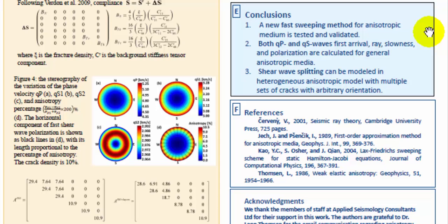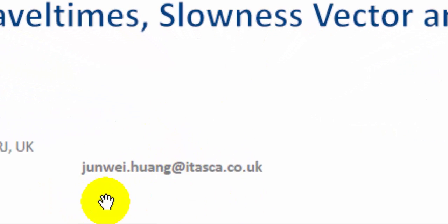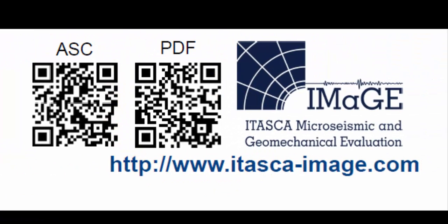We have developed a new fast sweeping method for anisotropic media and have tested and validated it in multiple tests. Both P and shear wave can be calculated including the first arrival, ray direction, slowness vector, and polarization. The shear wave splitting can be modeled in a heterogeneous anisotropy model with multiple sets of cracks with arbitrary orientations. If you have any questions and comments about this presentation, please leave a message or send me an email. The abstract of this presentation can be downloaded from the link provided — just scan the QR code. Thank you for your attention.